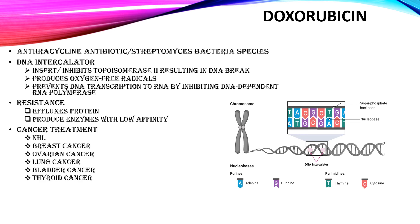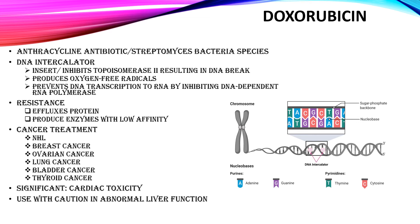Besides non-Hodgkin lymphoma, doxorubicin is also used in breast cancer, ovarian cancer, small cell lung cancer, non-small cell lung cancer, bladder cancer, and thyroid cancer. One of the significant side effects of doxorubicin is cardiac toxicity, so patients who receive doxorubicin need cardiac function monitoring. Also, doxorubicin needs to be used with caution in patients with abnormal liver function, and it may need dose adjustment. Finally, doxorubicin can also interact with some medications.